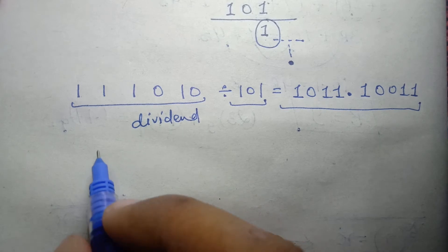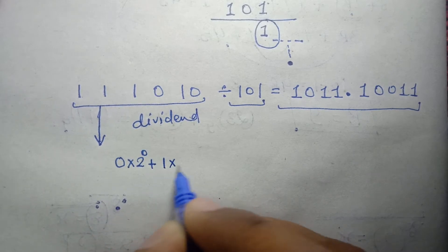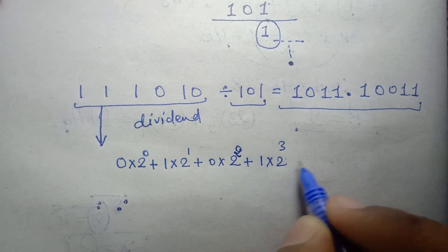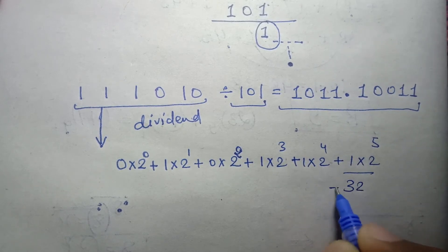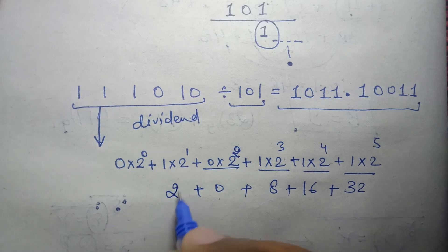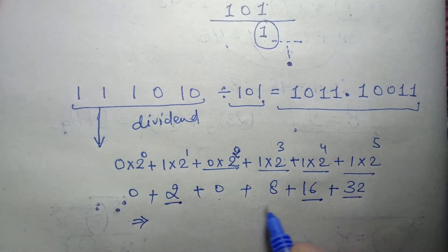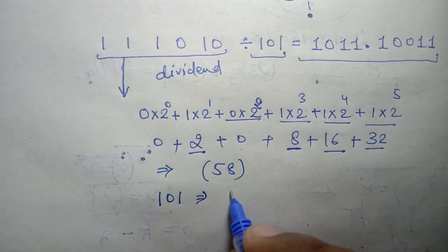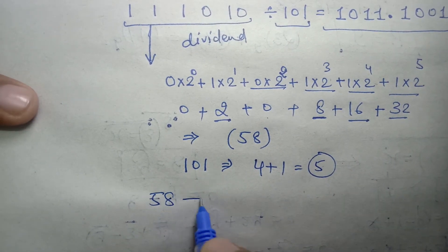Now let's cross-check the answer. Converting the quotient binary number to decimal: 0 into 2 to the power 0, plus 1 into 2 to the power 1, plus 0 into 2 to the power 2, plus 1 into 2 to the power 3, plus 1 into 2 to the power 4, plus 1 into 2 to the power 5 — that is 32 plus 16 plus 8 plus 0 plus 2 plus 0, giving 58. The divisor 1·0·1 in binary equals 4 plus 1, that is 5. So 58 divided by 5 gives 11.6 in decimal.